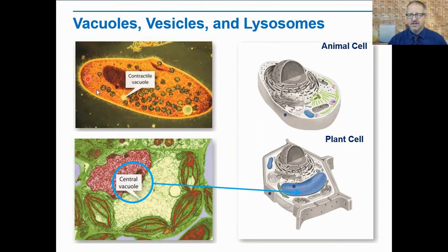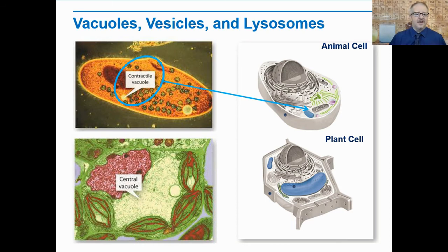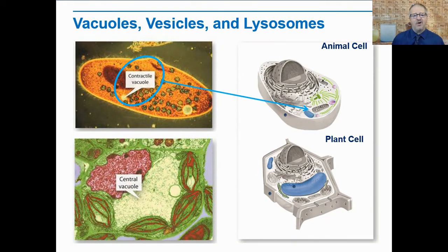Now let's take a look at the paramecium, which has a specialized vacuole called a contractile vacuole. This is how the paramecium regulates how much water it has inside itself. Parameciums are single-celled organisms — completely one cell. The contractile vacuole allows the paramecium to expel water if it has too much or to take in water if it needs more. This is one of the ways the paramecium maintains homeostasis, which is one of the essential functions of a cell.